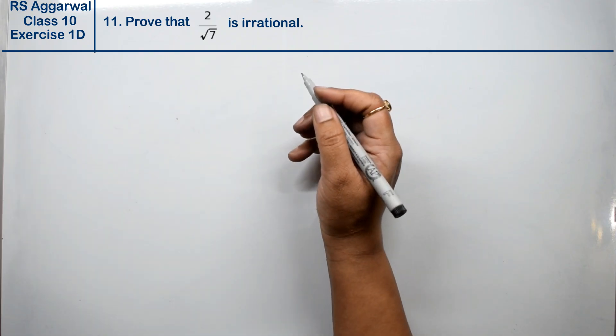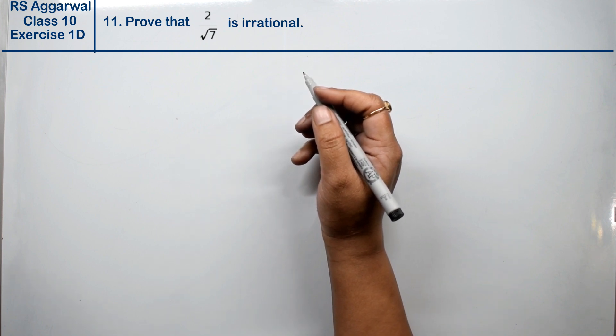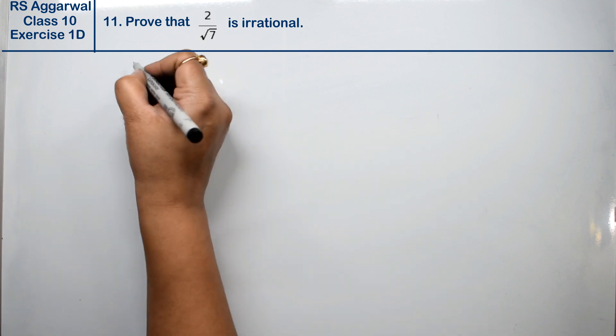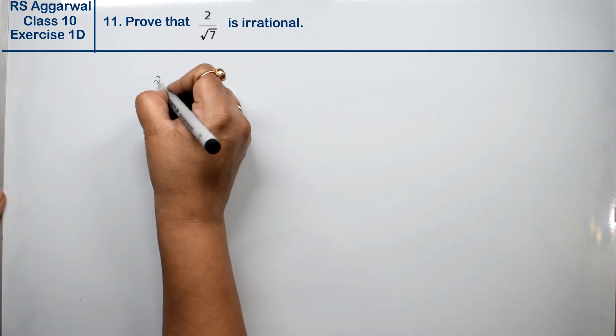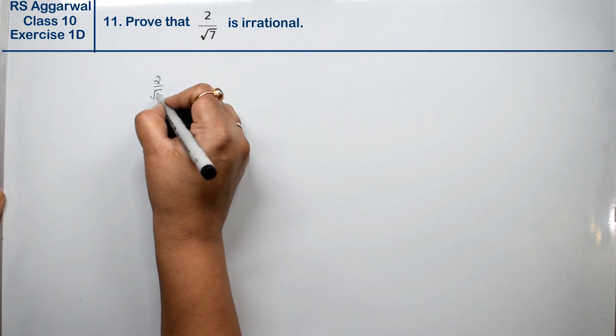Let's do question number 11 of exercise 1D, that is real numbers. Question number 11 is: prove that 2 upon root 7 is an irrational number.